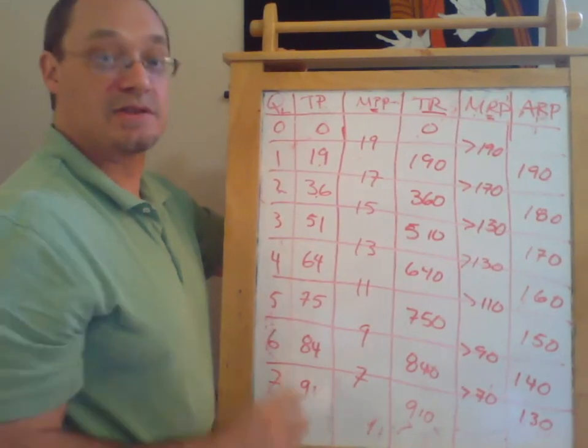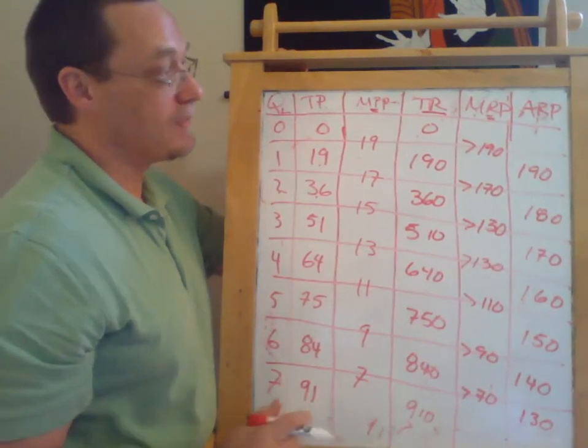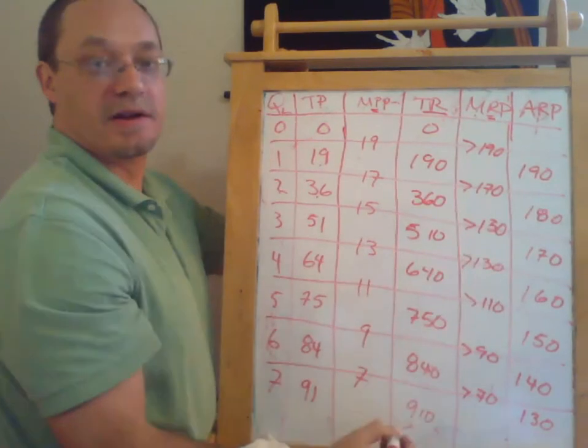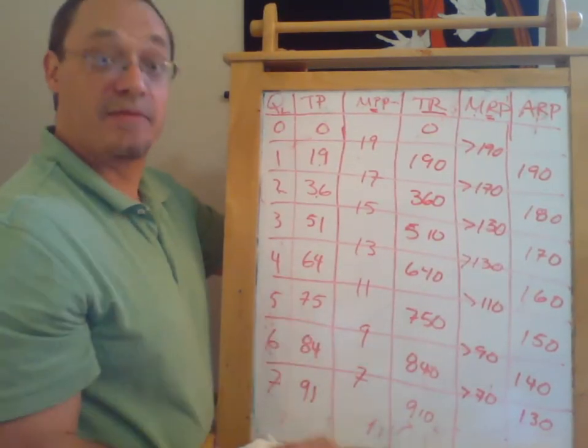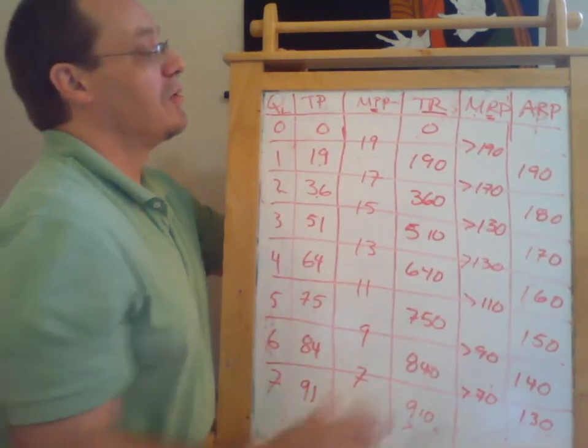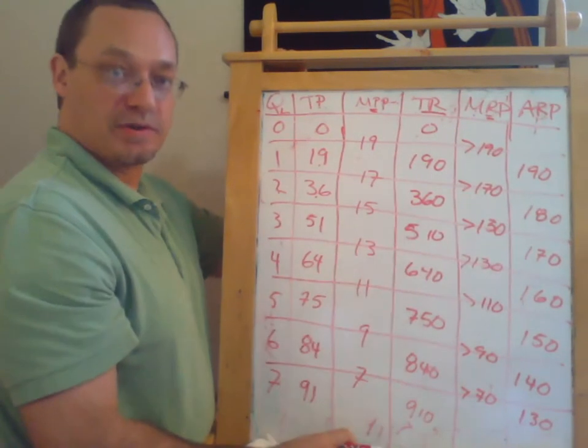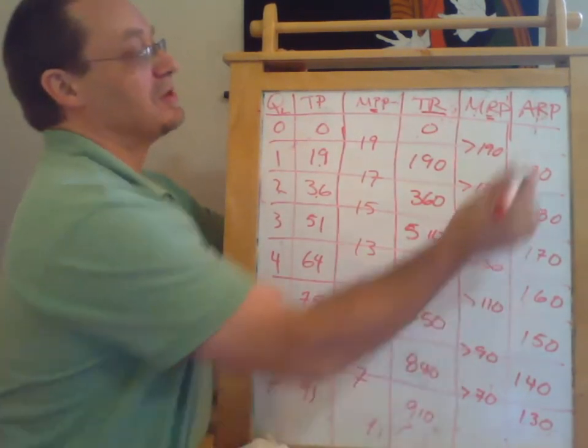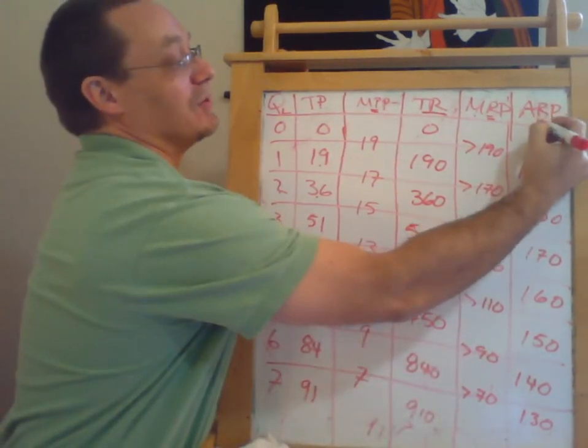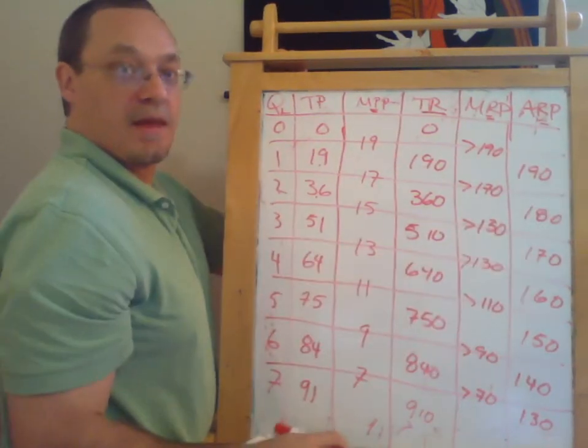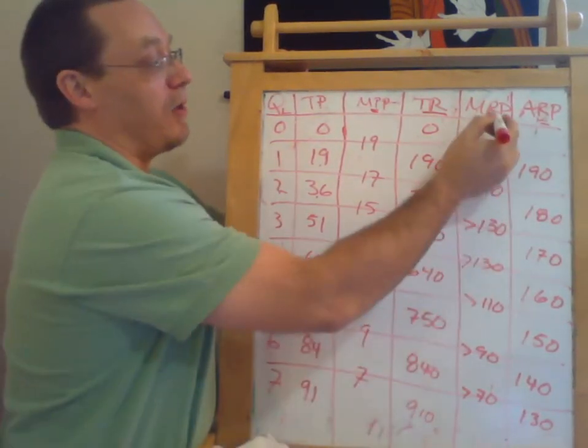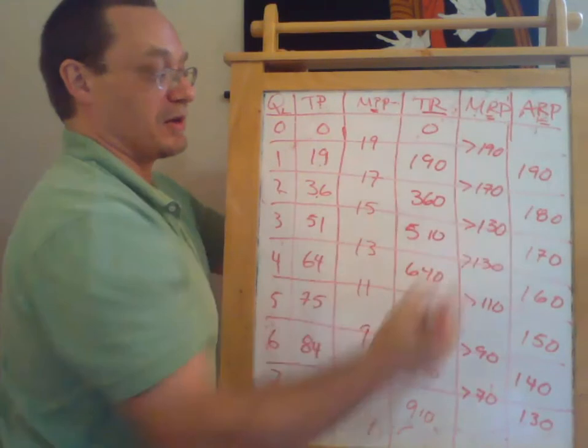Okay, and again, notice that just as before, the average physical product was the average of all the marginals up to that date. So it is also true that the average revenue product is the average of all the marginal revenue products to that point.